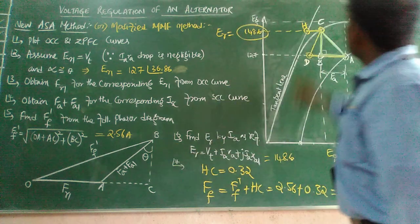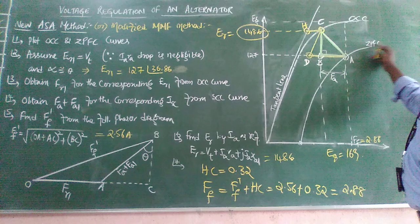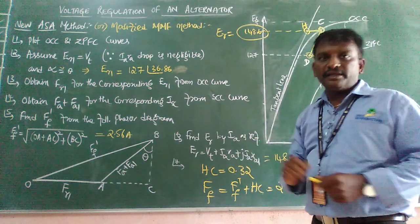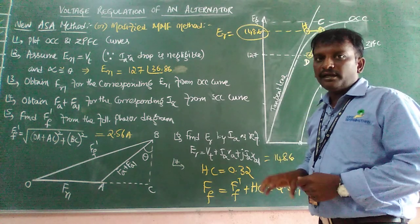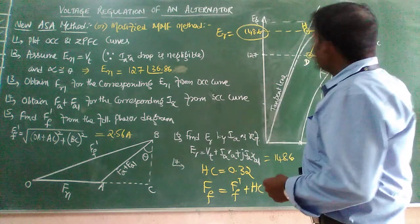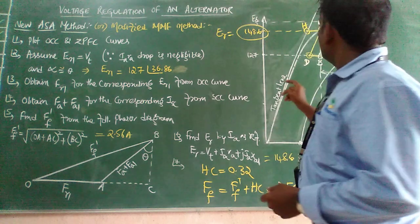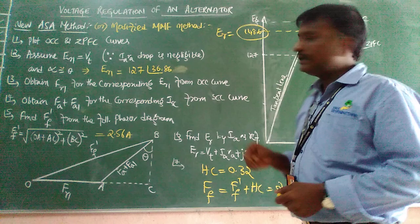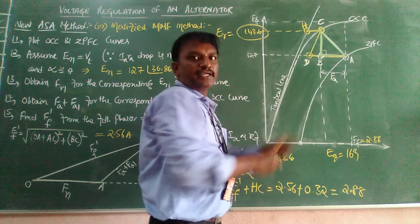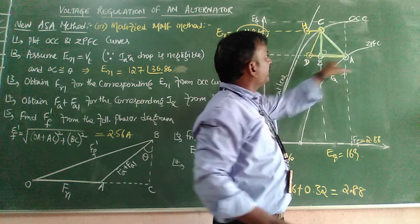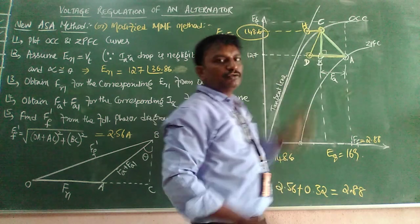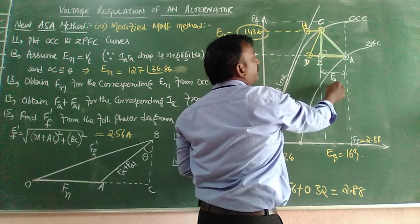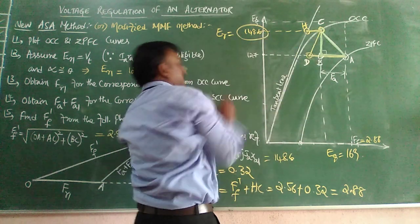By drawing these two curves — this is your OCC and ZPFC — we already know how to draw this ZPFC curve. We have the data, and based upon the data or per phase values, you draw the OCC and ZPFC. In the last class, we discussed how to construct the Potier triangle. Here is your Potier triangle ABC, where AB indicates the rotor MMF and BC indicates the IaXal drop.